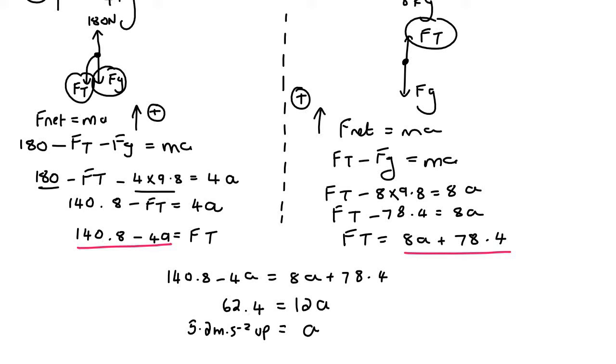And then to find the tension force, we can just plug that a back over there, for example. Or we can even plug it over there. It doesn't matter, you'll get the same answer. And so I'm going to plug it into this one. And so we can say that the tension force is going to be 8 multiplied by that 5.2 plus 78.4. And if we calculate that, we get 120 newtons. And we won't say up or down. Although I think in the original question, when I had the answer shown, I said 120 up. But we can't say 120 up because for the one object, the tension force is acting down. And for the other one, the tension force is acting up. So that was just a little bit of a mistake on my side. And so the final answer is 120 newtons.